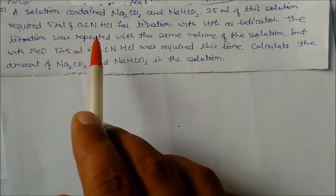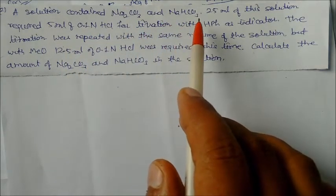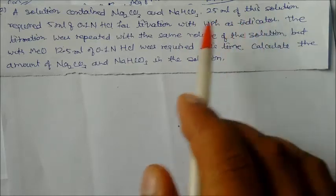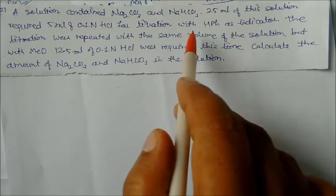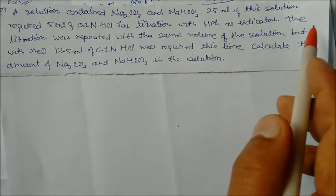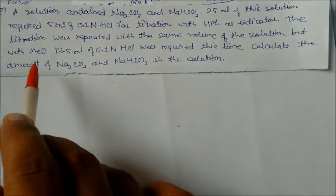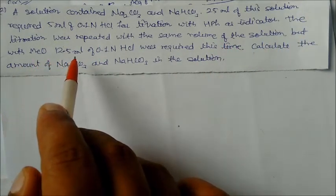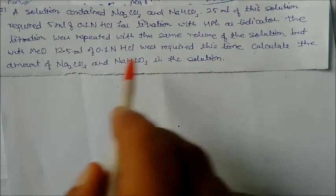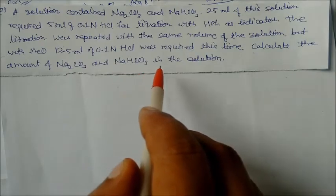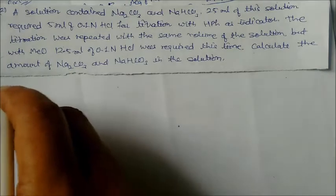In this problem, a solution contains sodium carbonate and sodium bicarbonate. 25 mL of this solution required 5 mL of 0.1 normal HCl for titration with phenolphthalein as indicator. The titration was repeated with the same volume of solution but with methyl orange, and 12.5 mL of 0.1 normal HCl was required. Calculate the amounts of sodium carbonate and sodium bicarbonate in the solution.